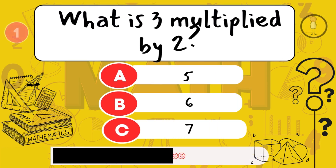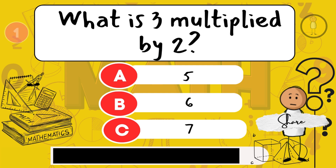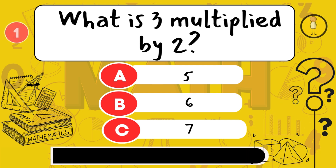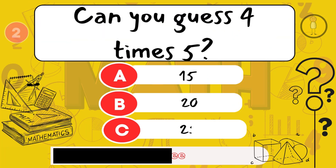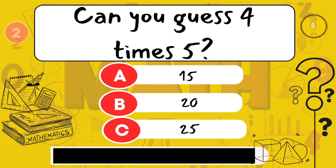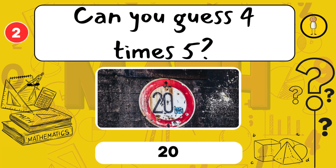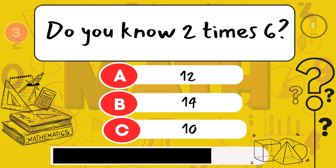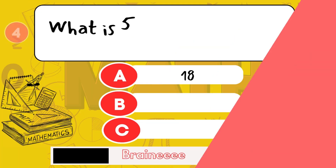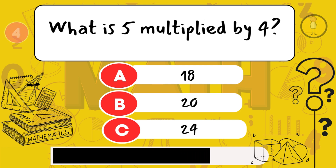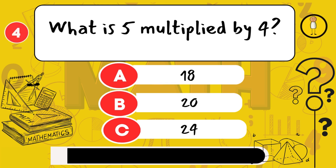What is 3 multiplied by 2? 6. Can you guess 4 times 5? 20. Do you know 2 times 6? 12. What is 5 multiplied by 4? 20.